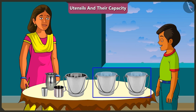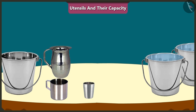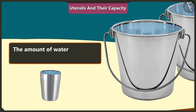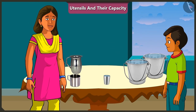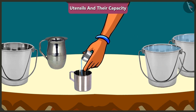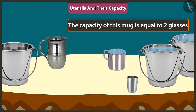Mummy, what are these two buckets of water for? Mishtu, we will use this water to find the capacity of all these vessels. First of all, I will fill this glass completely with water. The amount of water in this glass is its capacity. Now, with the help of this glass, I will fill this mug. One glass, two glasses. We can fill this mug with two glasses of water. This shows that the capacity of this mug is equal to two glasses of water.